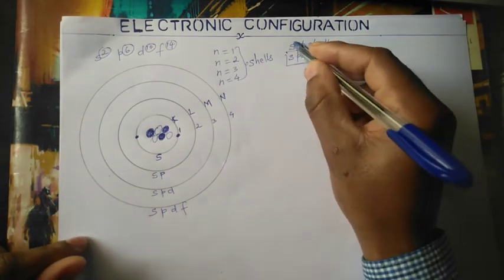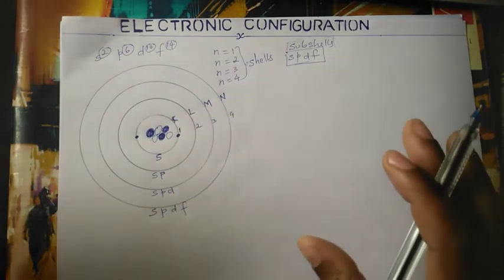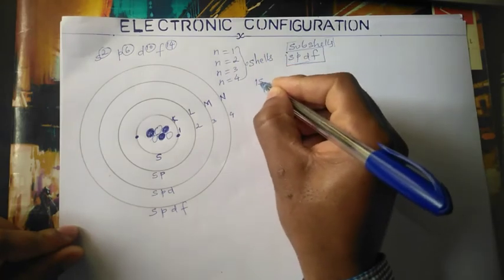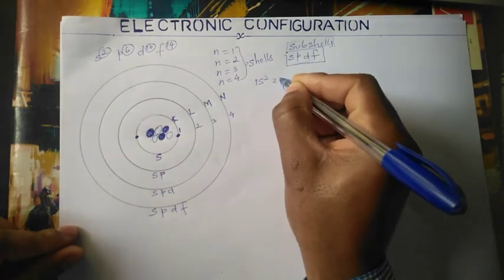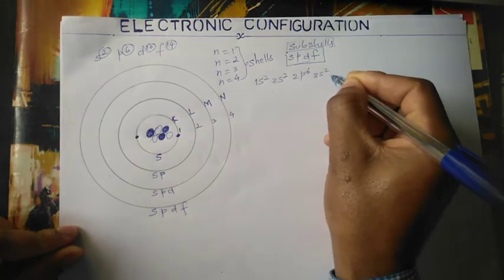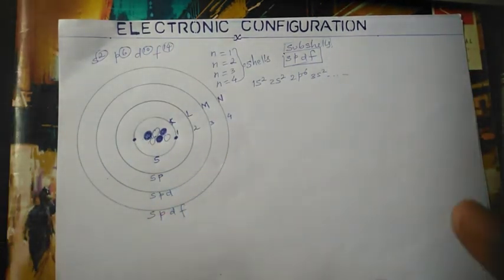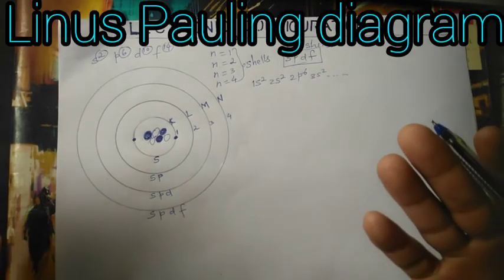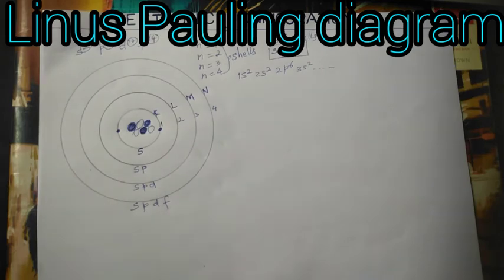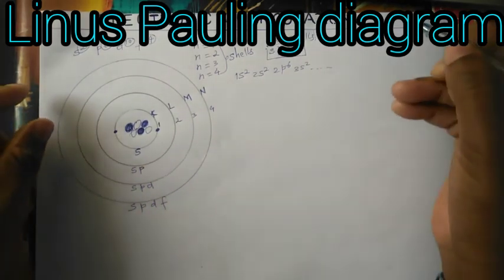I will show you the Linus Pauling diagram. The diagram will look something like this: 1s2, 2s2, 2p6, 3s2, and so on. This diagram will help us find the electronic configuration of any element in the periodic table. We will use this Linus Pauling diagram to find the electronic configuration of any element we want to work on.